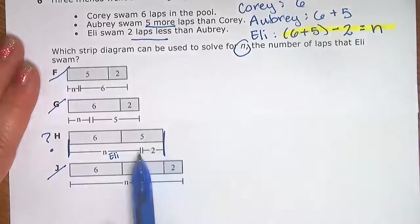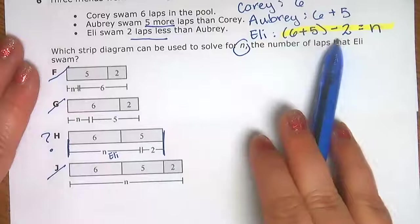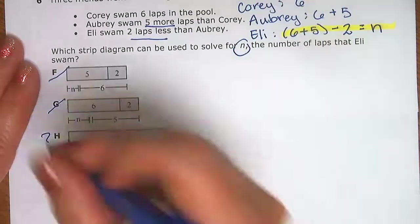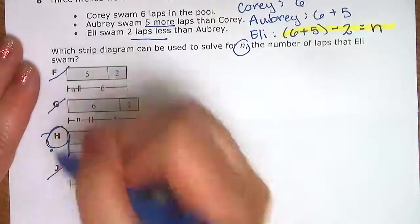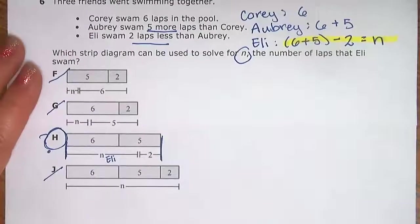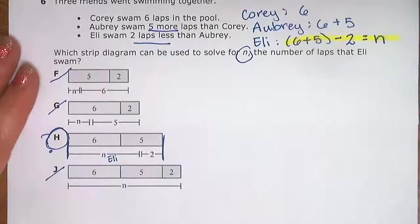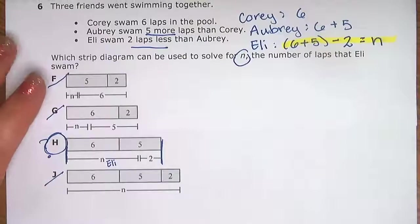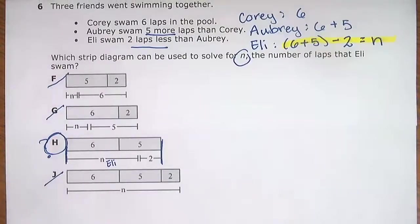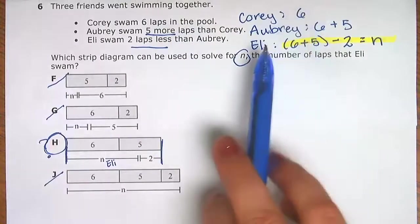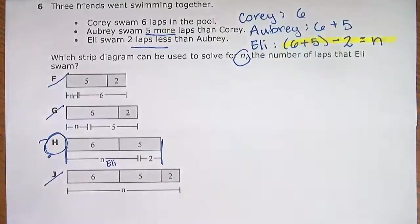Then we back up by two, or subtract two, and we are left with N, which is the number of laps that Eli swam. For the guided practice, work together and ask your teacher for help if you need anything. Remember to always take the math out of the reading first — just write down the math — and it'll help you organize your information.